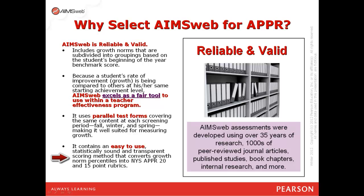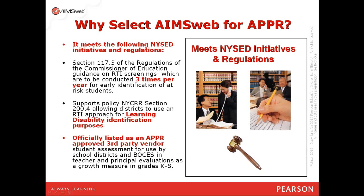Lastly, AIMSweb contains an easy-to-use, statistically sound, and very transparent scoring method that converts growth norm percentiles into your New York State APPR 20 or 15-point rubrics. AIMSweb will provide this service for you. Additional reasons for selecting AIMSweb for APPR is that it meets New York State Education Department initiatives and regulations.